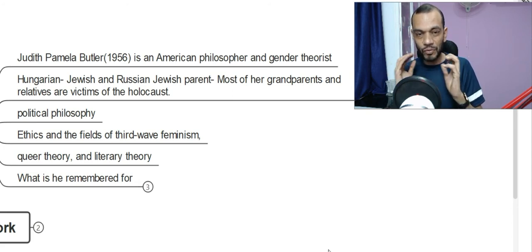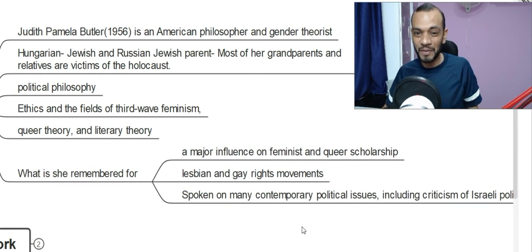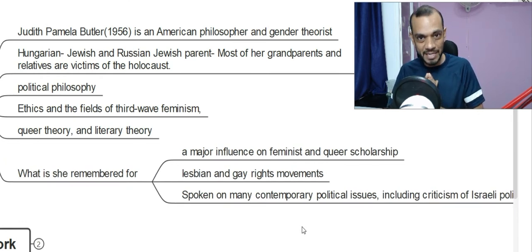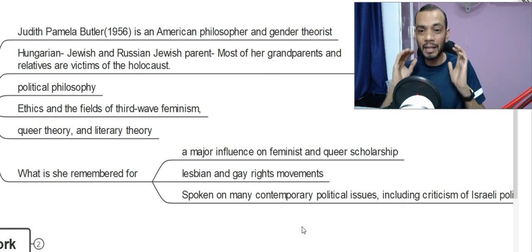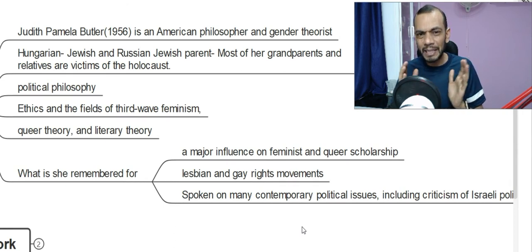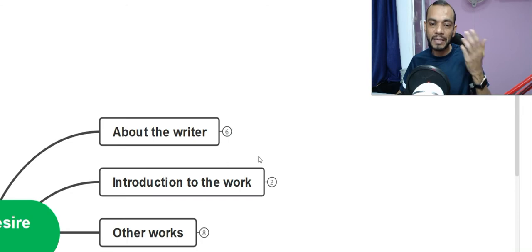She's regarded as one of America's leading queer theorists. She's remembered for her major influence on feminist and queer relationships, and she's also a champion of lesbian and gay rights movements. She has also spoken about a lot of political contemporary issues, including criticism of Israeli politics. So ultimately, she is what you may call one of our people — she lives among the people and speaks for the people.